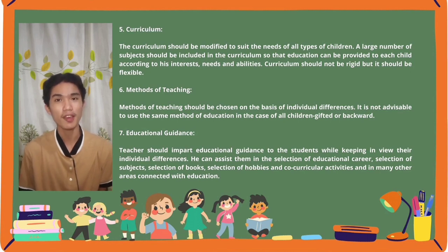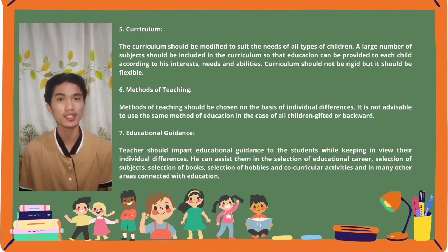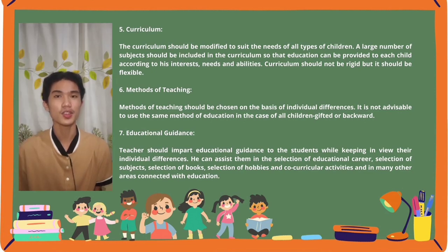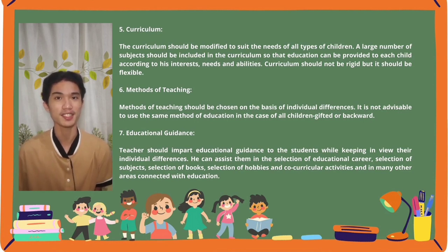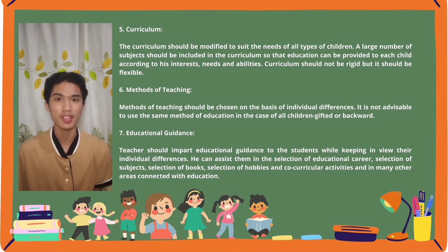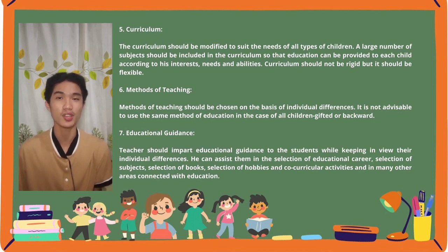Fifth is curriculum. The curriculum should be modified to suit the needs of all types of children. A large number of subjects should be included in the curriculum so that education can be provided to each child according to his interests. The curriculum should not be rigid but flexible. Sixth, methods of teaching should be chosen on the basis of individual differences. It is not advisable to use the same method in the case of all children — gifted or backward — because students have different intelligence levels.